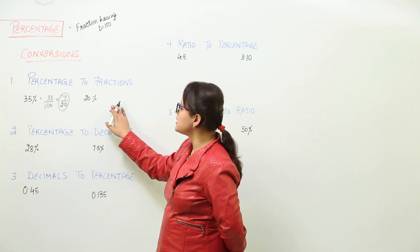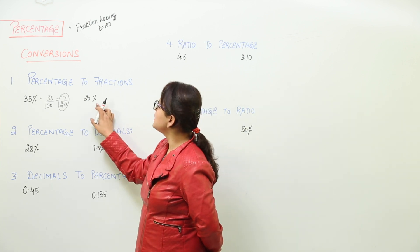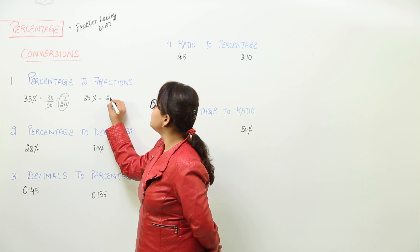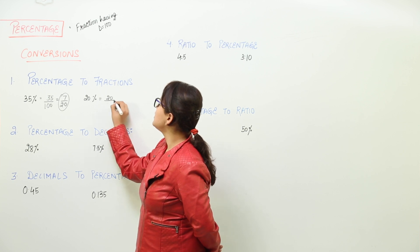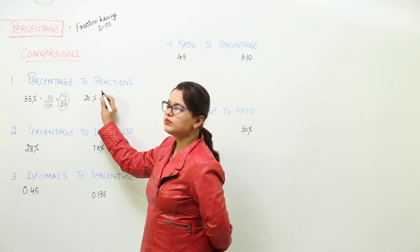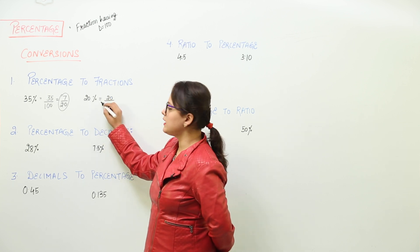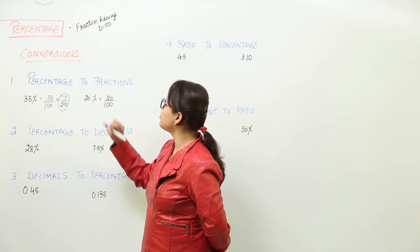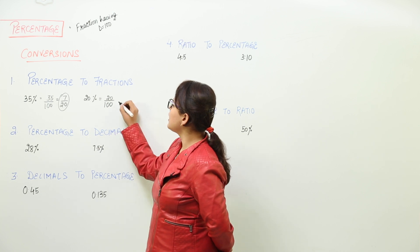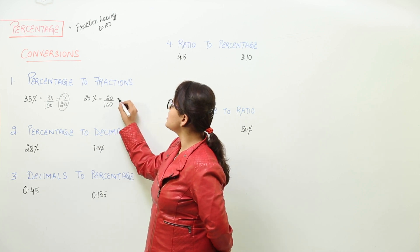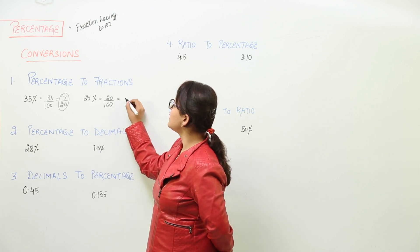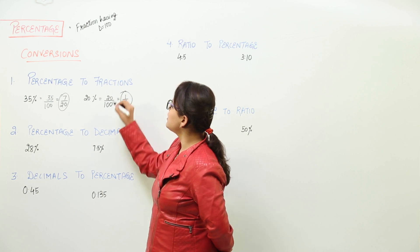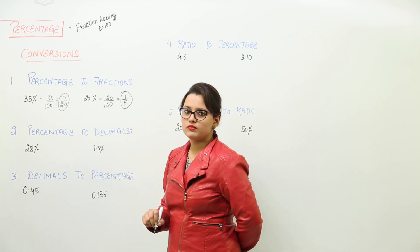The second one is converting 20% into fractions. Again we write 20 over 100 to remove the percentage sign, and we can check if it simplifies further. Yes, we get it as 1 by 5.